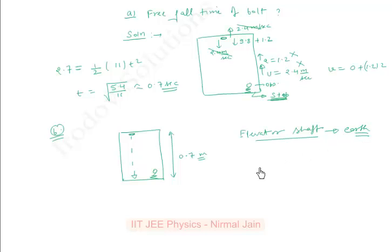So with respect to earth, if we have to find the displacement of the particle, then we can easily find using second equation. So let's say the bolt was having speed 2.4 meter per second and it was having an acceleration of g, that is 9.8 meter per second squared in downward direction.